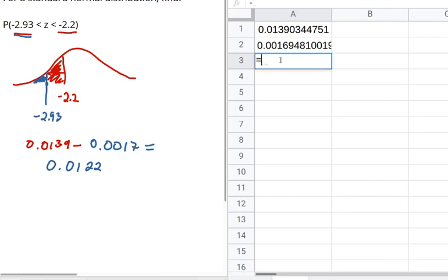And now I just subtract the two. So I'm going to say equals the first one minus the second one. Now, alternatively, I could have plugged it all in to one line.